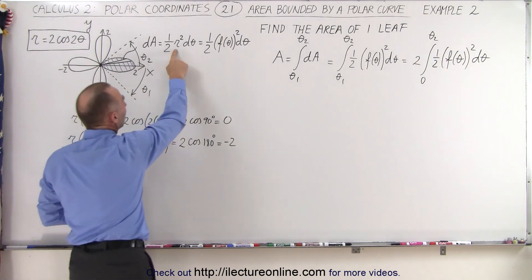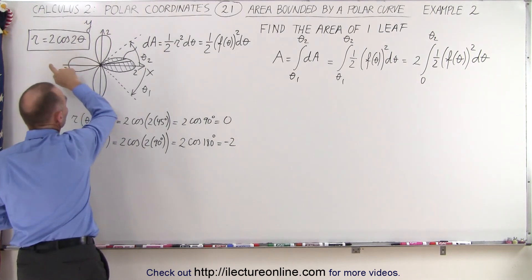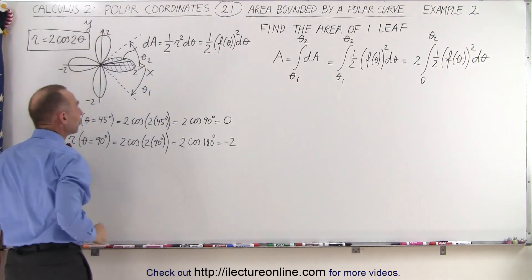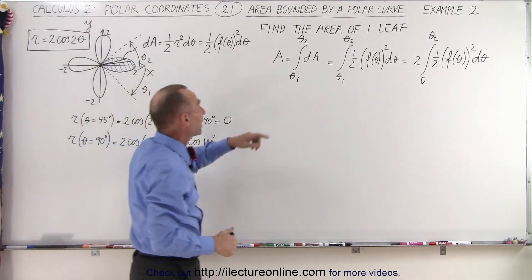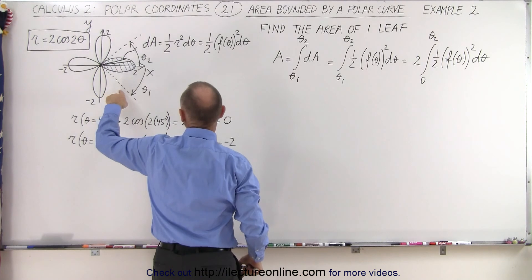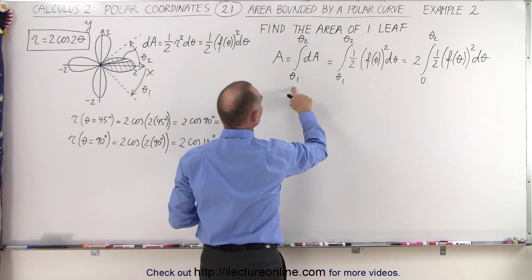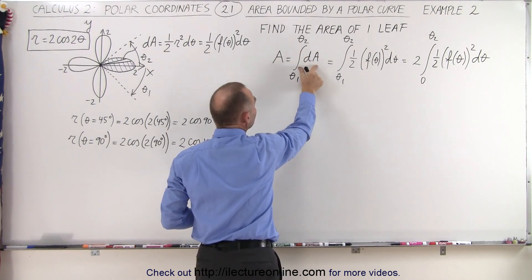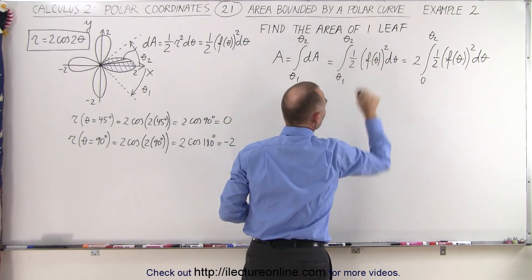Instead of writing r, we can write r as a function of theta, which is defined right here. So the function of theta would be 2 times the cosine of 2 theta. And to find the area of one leaf, we're going to integrate all the little dAs from our initial angle theta 1 to our final angle theta 2. So the integral from theta 1 to theta 2 of dA, where dA can be replaced by one half times the function squared times d theta.